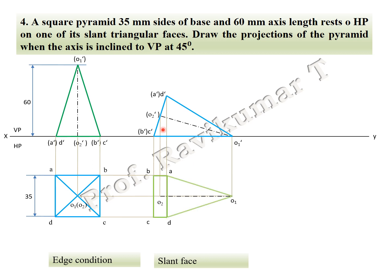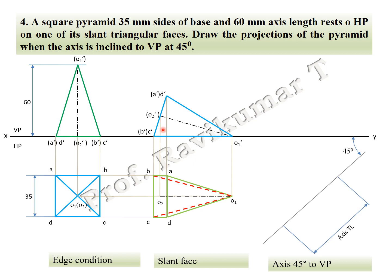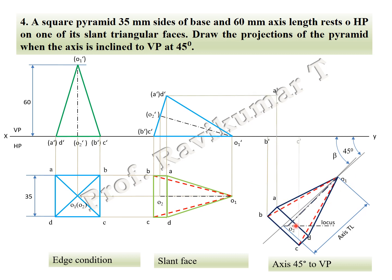Draw projection line downward, complete the second position. Since it is a locus problem, find out true length and apparent length. Take 45 degrees, use true length, draw locus, then use apparent length from the same point, cut an arc, join from the intersection point and extend to XY line to find out beta. Place the axis with inclination at beta. Draw projection line upward. Looking from the bottom, the complete face is visible — draw with visible line. The point away from the observer is invisible.